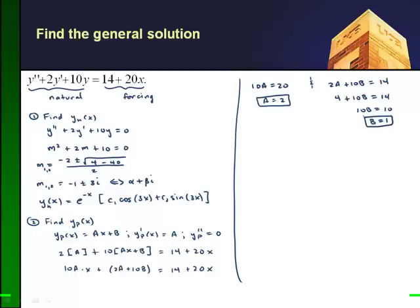And so I've determined my coefficients, and my particular solution, yp of x, which has this form. Again, it looks like my forcing function. It's going to be ax plus b. It's going to be 2x plus b, which is 1.